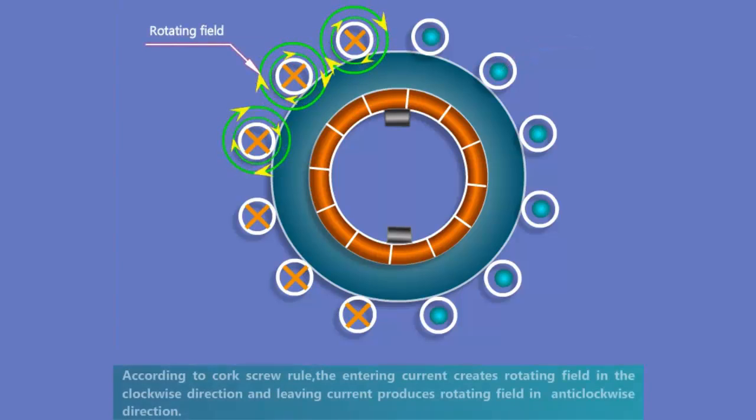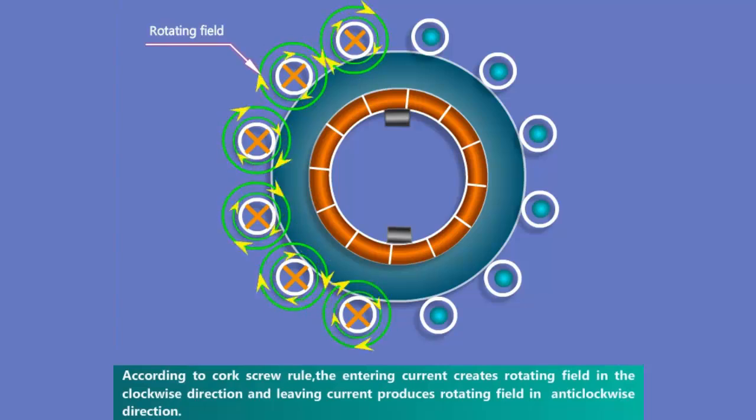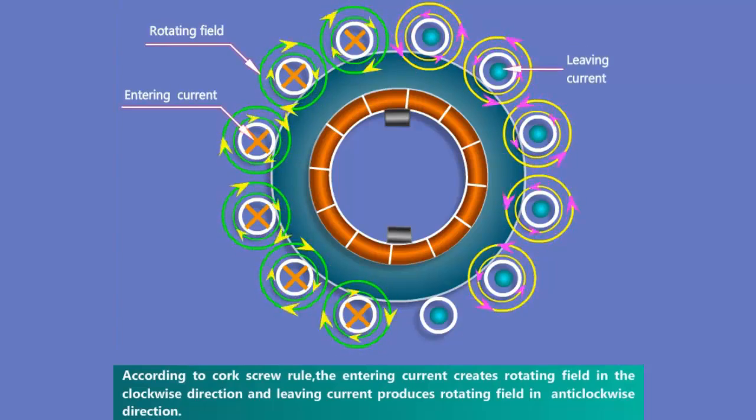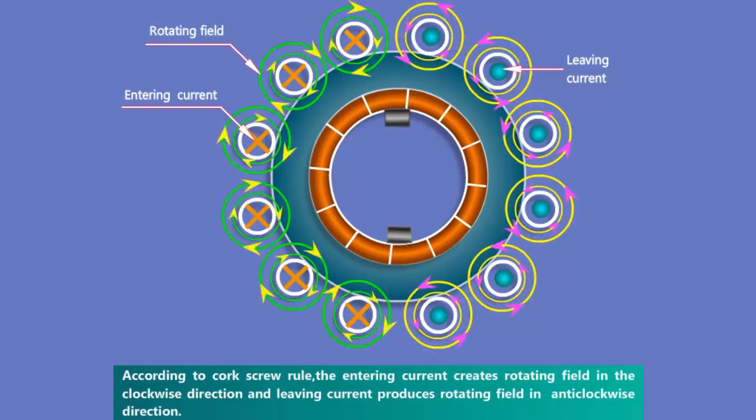According to cork screw rule, the entering current creates rotating field in clockwise direction and leaving current produces rotating field in anti-clockwise direction.